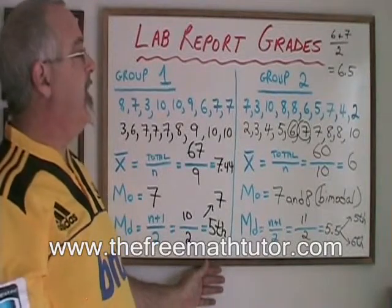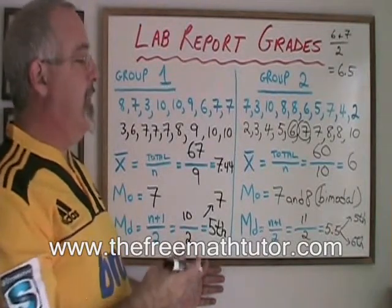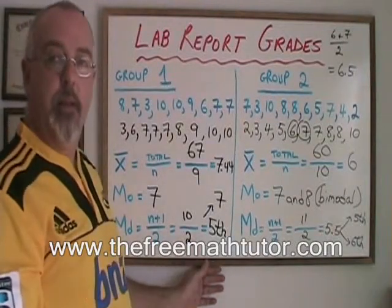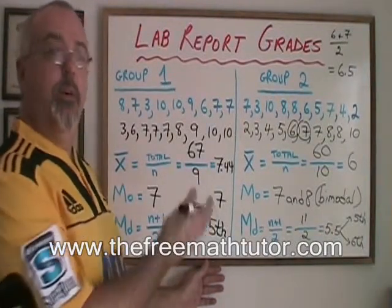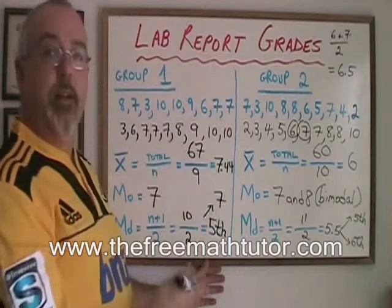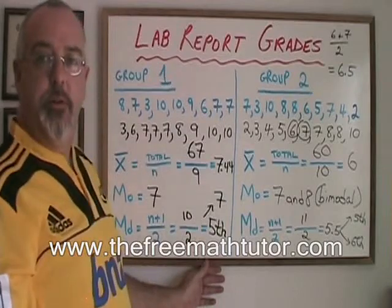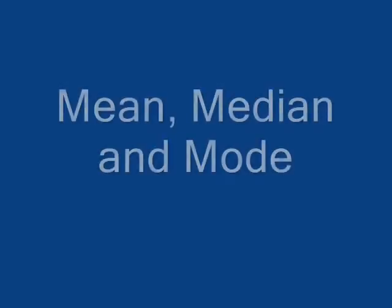This is how we find the mean, the mode, and the median for a group of values in a data distribution.